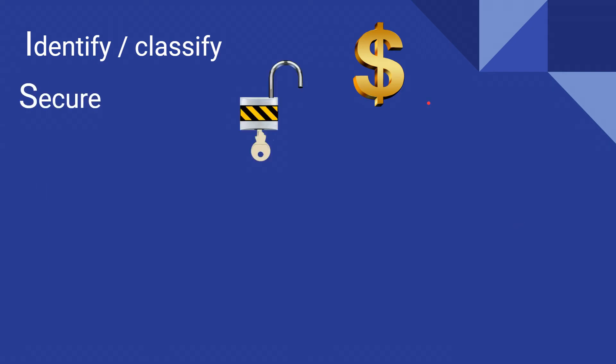The next step of the life cycle is to secure the asset. You're going to secure it based on its value and its classification, typically by establishing a secure baseline for the asset.